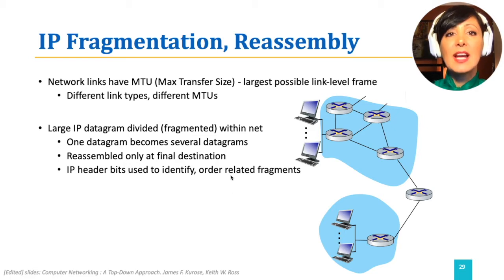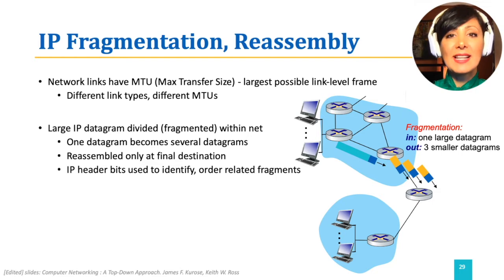Large IP datagrams need to be divided into smaller datagrams while passing along links with a smaller MTU than the datagram size. This is called fragmentation.